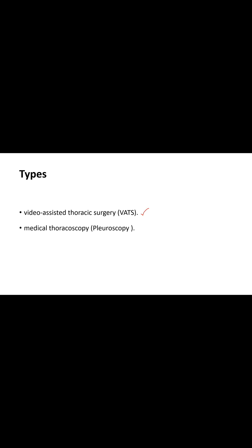There are basically two types of thoracoscopes. One is video-assisted thoracic surgery, or surgical thoracoscopy, which is done under general anesthesia and will be discussed in coming sessions. The other is medical thoracoscopy or pleuroscopy, which is done under local anesthesia.